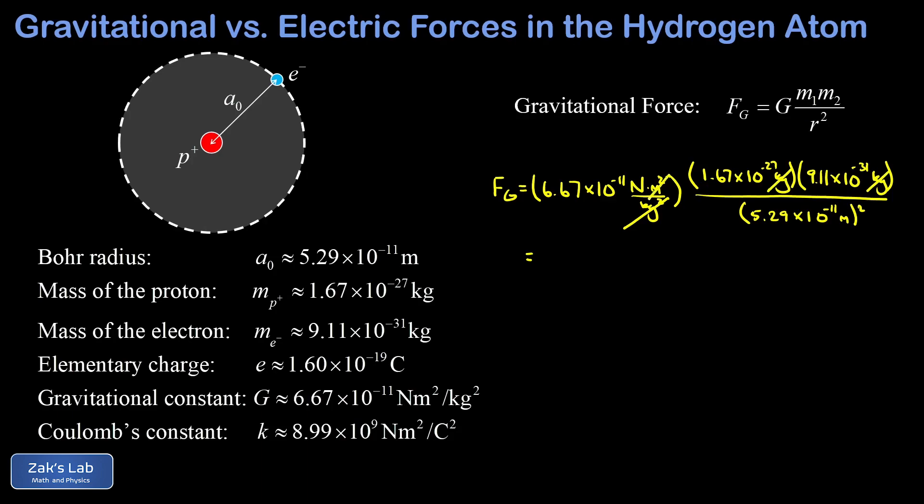Then I have two factors of meters in my numerator for the units on big G, and those are going to cancel the two factors of meters in the denominator from squaring the radius. This leaves us with units of Newtons. And when I run the numbers on this to three significant digits, I get 3.63 times 10 to the negative 47 Newtons.